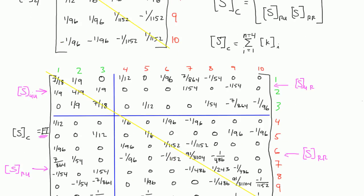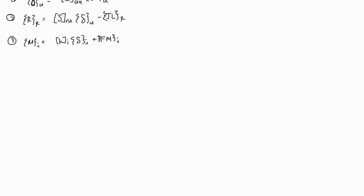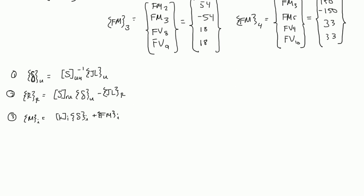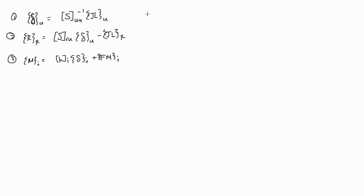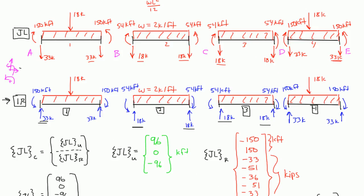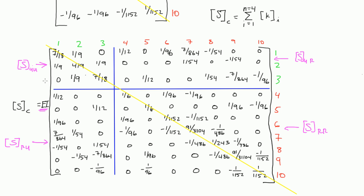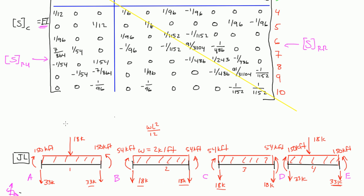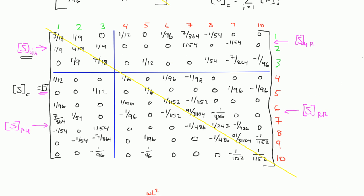The way we do this is delta U is equal to your S sub UU inverse matrix. Our S sub UU matrix was this matrix right here — let me box that in yellow. This matrix right here is your S sub UU matrix.